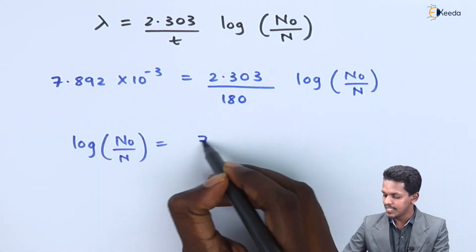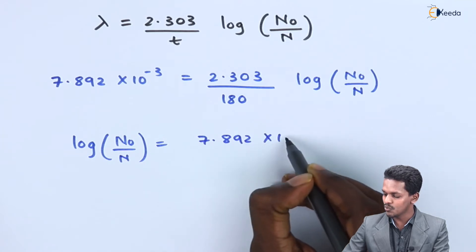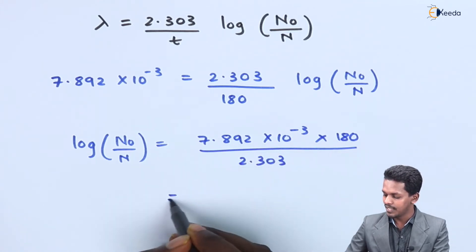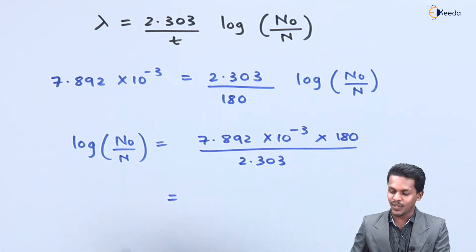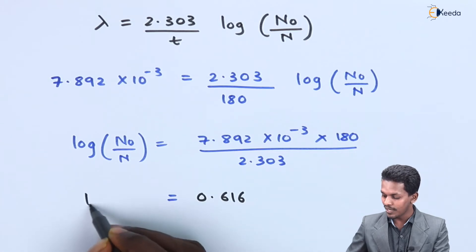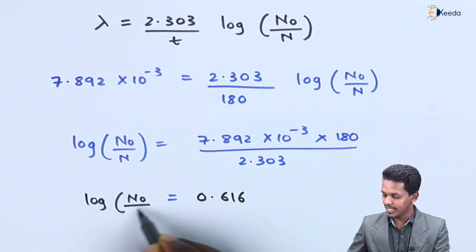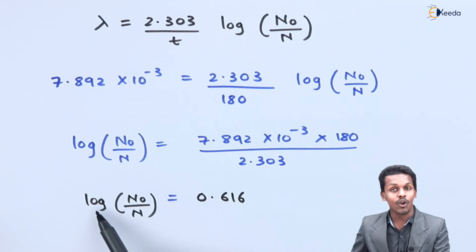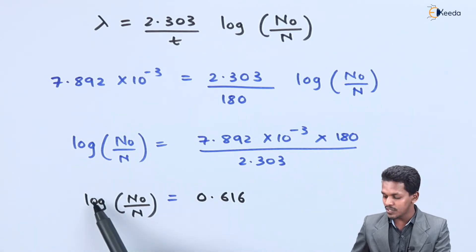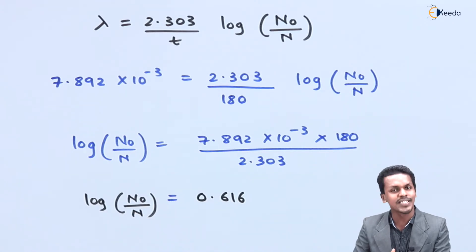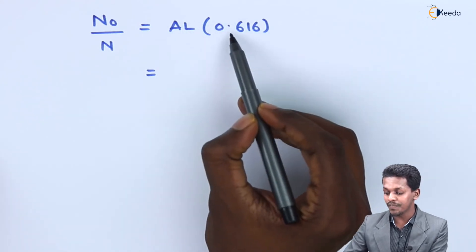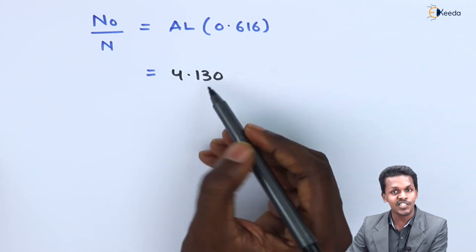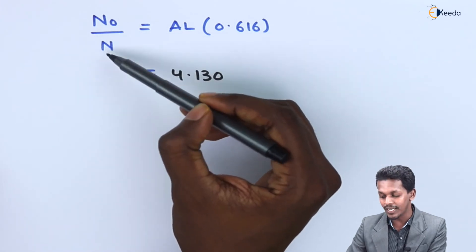We multiply 7.892 × 10⁻³ by 180 and divide by 2.303 to find log₁₀(N₀/N). We get the value 0.616 for log₁₀(N₀/N). Since we cannot find N directly with the log present, we need to take the antilog. The antilog of 0.616 is 4.130.